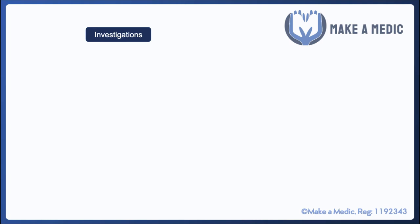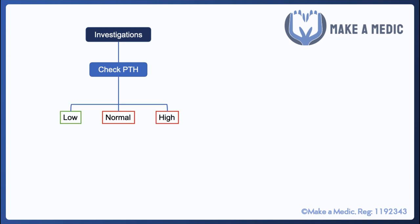When investigating hypercalcemia, remembering the physiology of calcium homeostasis is very helpful. The first thing to do is check PTH, as it's such an important hormone in increasing calcium levels. The result will be either low, normal, or high. If the PTH is low, it suggests that something else must be causing the high calcium level, and this is concerning because it's usually suggestive of hypercalcemia of malignancy. It is very rare to have such massively high serum vitamin D concentrations that they cause hypercalcemia, so generally a low PTH in the context of hypercalcemia points toward malignancy.